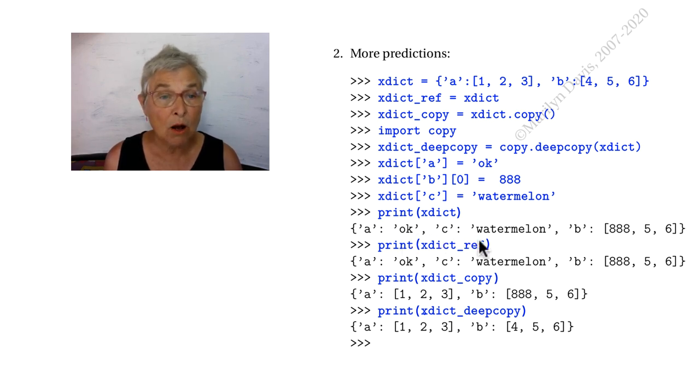So here we see it all reflected in xDict. We have our 'ok' for our value for 'a'. Our 'c': 'watermelon' is the new key-value pair. The order is unpredictable, and here we see the 'c' came out before the 'b'. And for the b[0], we put in the 888.